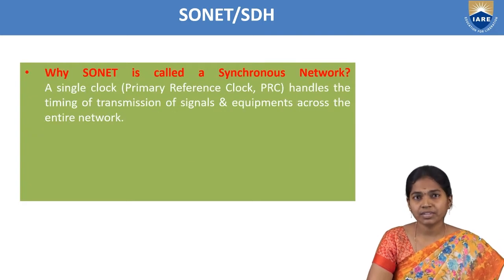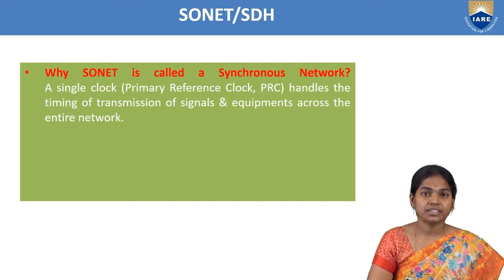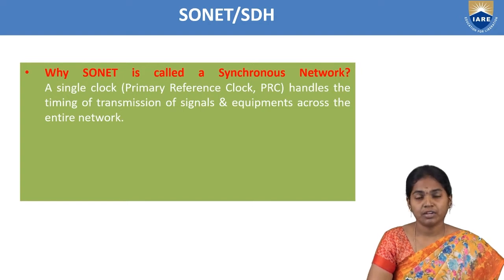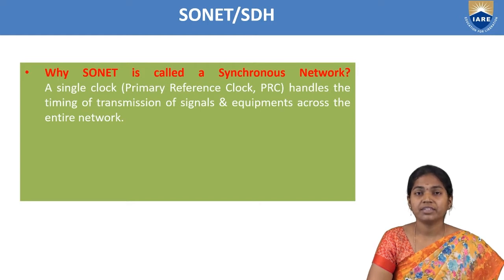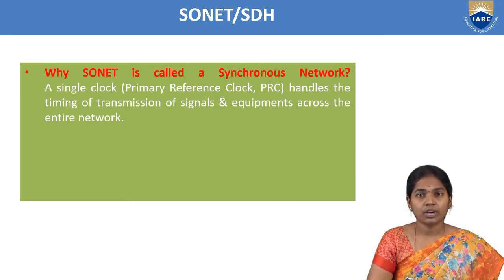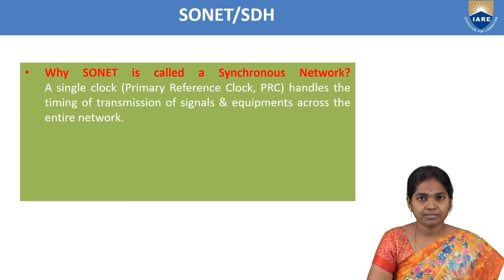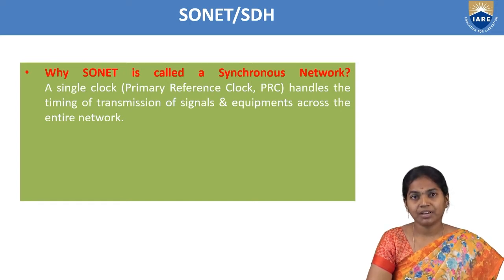SONET is called a Synchronous Network because synchronization means when transmitting information from source to destination, the sender and receiver both have the same clock pulse — both use a single clock pulse. Multiple data signals are combined using synchronization and transmitted over a single optical fiber. This single clock is a PRC, Primary Reference Clock, which handles the timing of transmission of signals and equipment across the entire network.